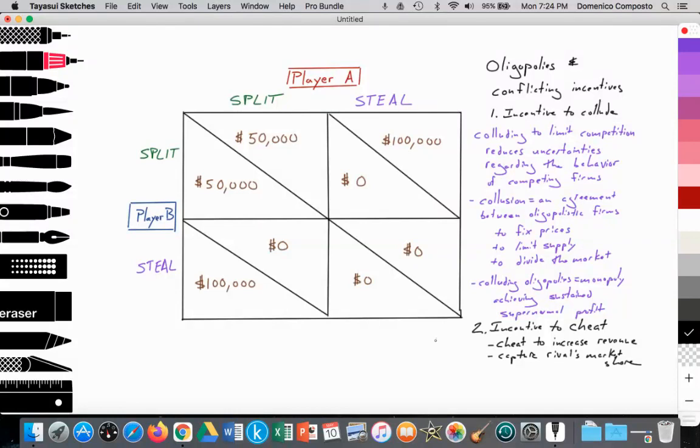One way to illustrate that is through a payoff matrix, which you see illustrated here. To draw it's very simple. It's obviously a rectangle, and we will have two players in this case. We have player A at the top and player B on the left side of this box.